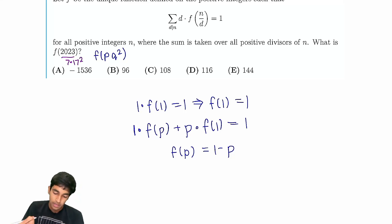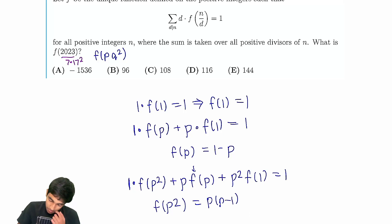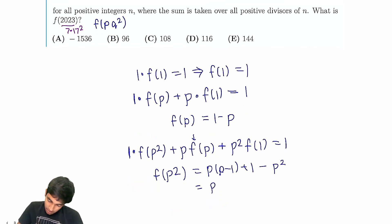We have 1 times f(p²) plus p·f(p) plus p²·f(1) is 1. So, p times 1 minus p, we get f(p²) equals, this is p times 1 minus p, so we have p(p-1) plus 1 minus p². And if you simplify this, we get p² minus p plus 1 minus p². That stuff cancels. This is 1 minus p.